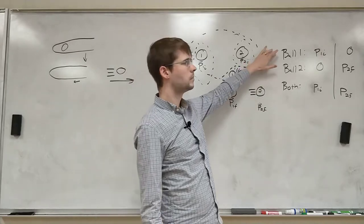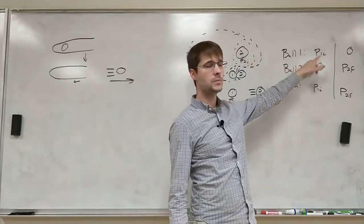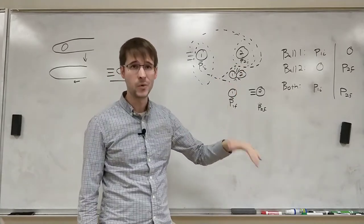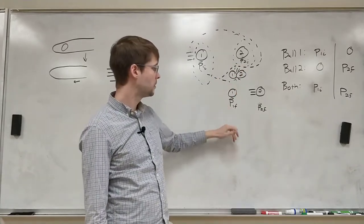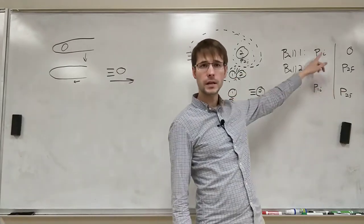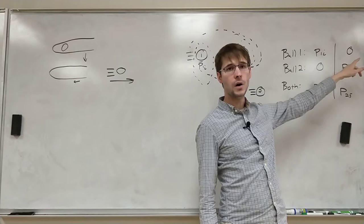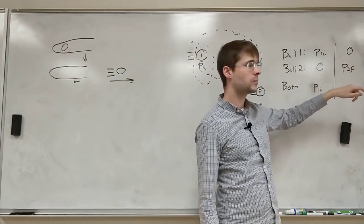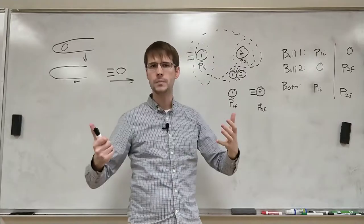So we get ball one has a momentum of p1 initial and actually p2 initial is zero because it stopped moving there. And at the beginning, ball two is stationary so its initial momentum is zero. So we look here, this one has an initial momentum, no final momentum. No initial momentum but it does have a final momentum. But if we look at the whole system all together,